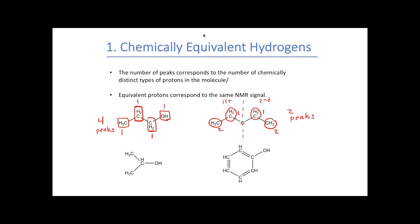Looking at isopropanol in a similar fashion, I can draw a mirror plane right through the oxygen and the central carbon. This means that the two methyl groups are identical to each other and will give me one signal. The central CH will give me another signal. And then finally, the OH will give a third signal. So isopropanol will give us three peaks in our NMR spectra.